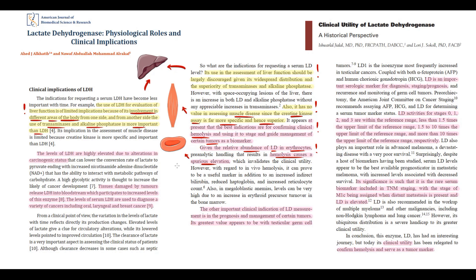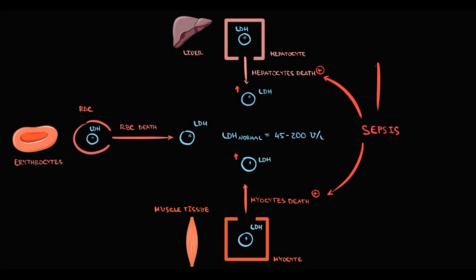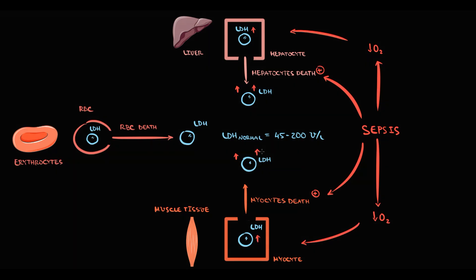Two other important pathological conditions must be mentioned. First, sepsis: pathogens and toxins can cause severe damage to liver tissue and skeletal muscles, and with the death of hepatocytes and myocytes, additional LDH enters the blood. Additionally, sepsis can cause hypoxemia, which provokes liver and muscle tissues to shift energy production from aerobic to anaerobic glycolysis, stimulating cells to express more LDH — and because cells die, even higher amounts of LDH enter the blood, causing significant elevation.